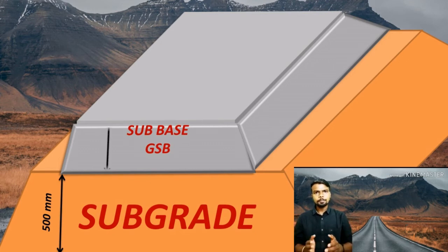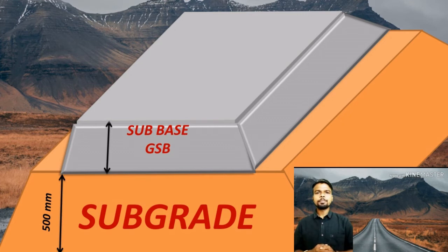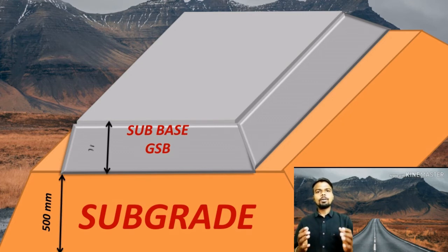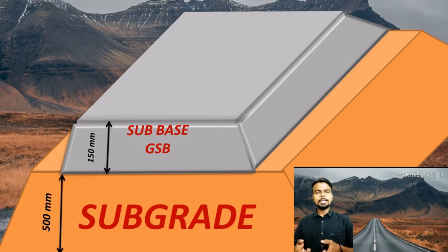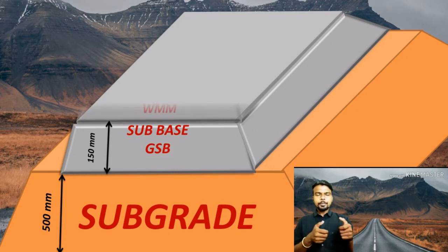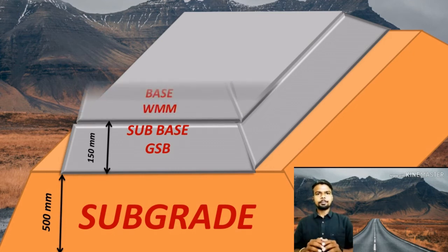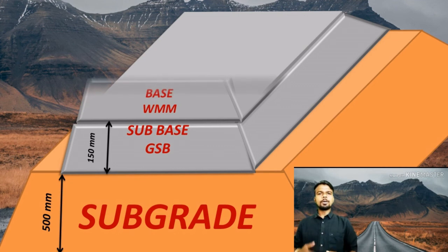The minimum thickness of the drainage-cum-filter layer is 150 mm. The functions of the sub base layer are: it provides strong support for the compaction of the granular base layer (WMM or WBM), it serves as a drainage or filter layer, and it protects the subgrade from over-stressing.